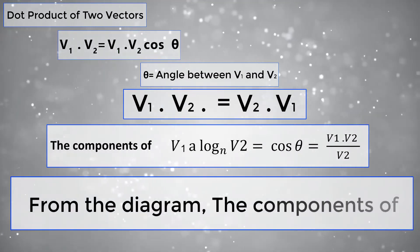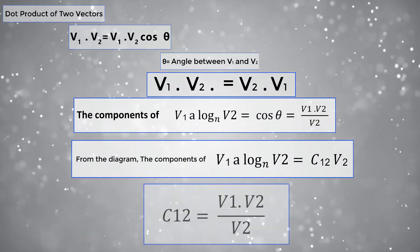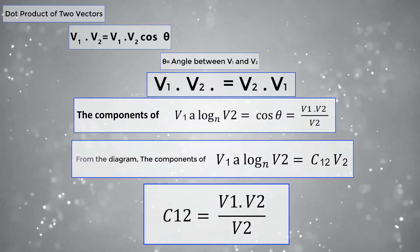From the diagram, the component of V1 along V2 equals C12 into V2. Therefore, C12 equals V1 dot V2 by V2.